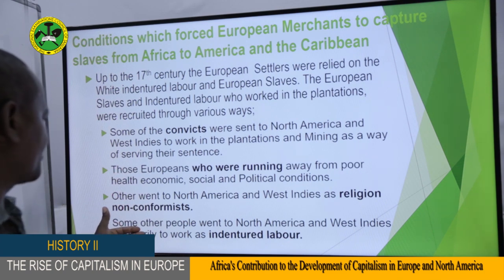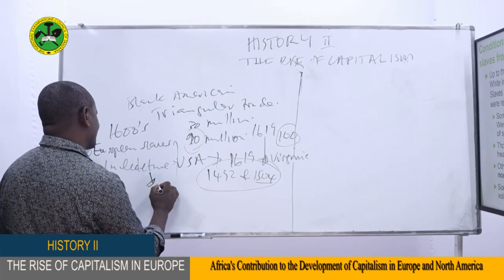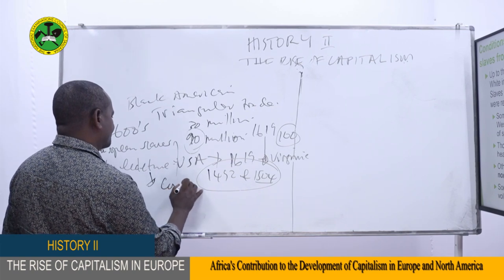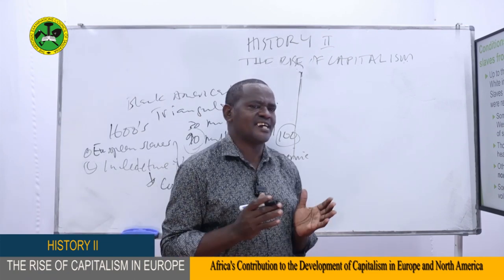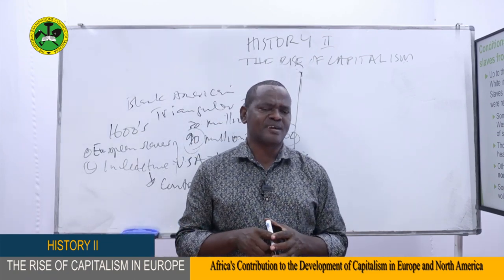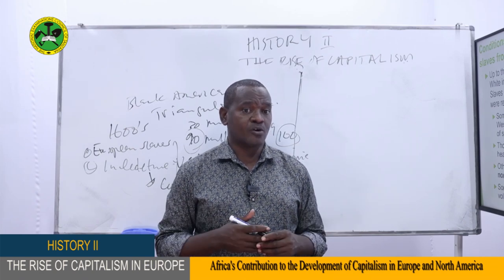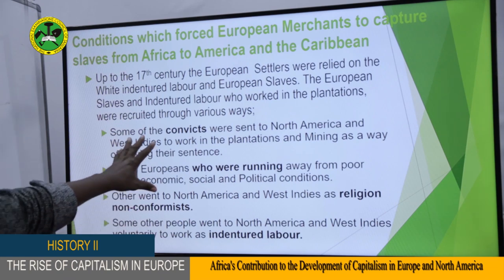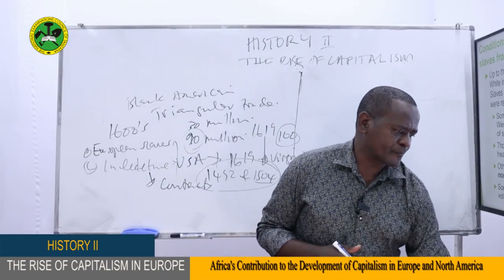Another group were those who went to America as indentured labor — people who worked on contract. After the end of their contract, they demanded payment and were paid in the form of land or money. This was the way settlers recruited people to work in their plantations before the arrival of the black people.